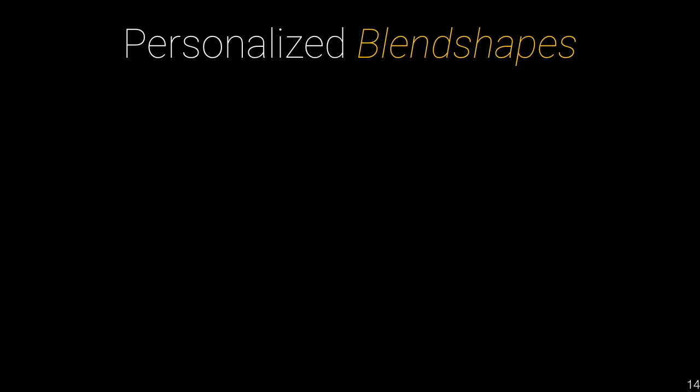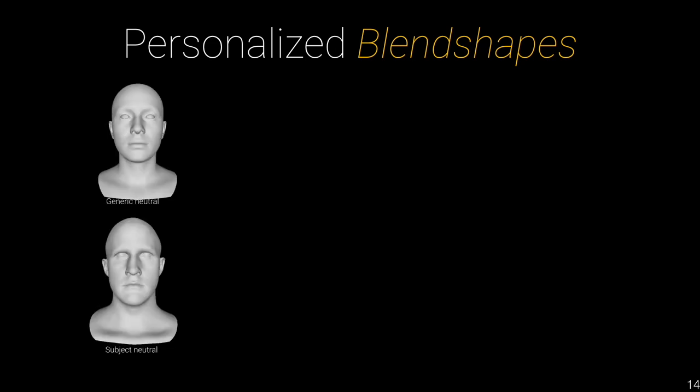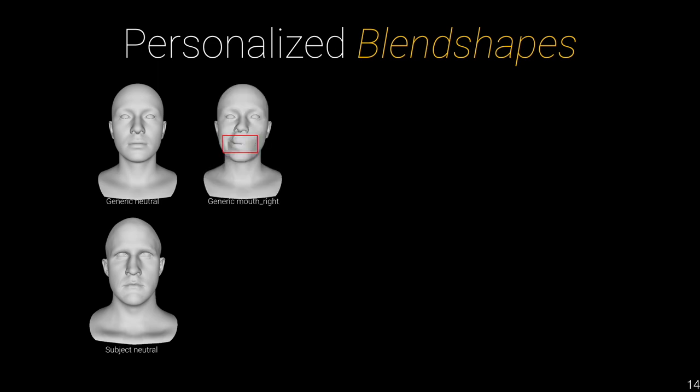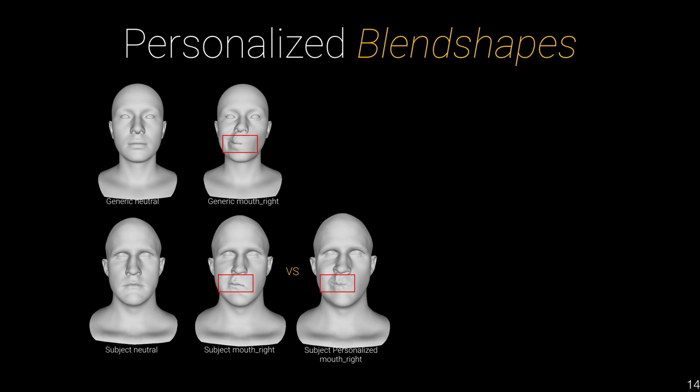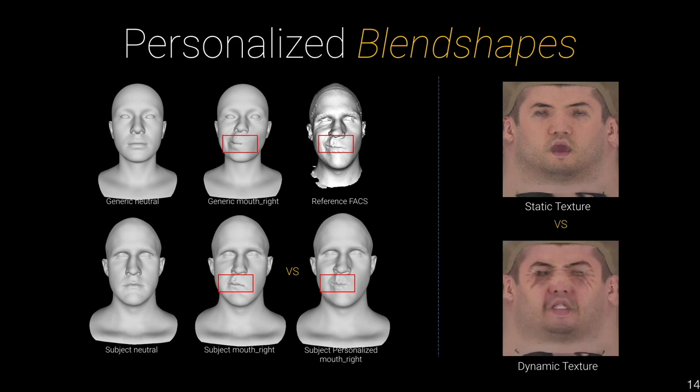Blend shapes are widely used in the animation industry and provide the fundamentals for advanced modeling like muscles, joints, and bones. Personalized blend shapes show the specific way a specific subject performs a unit expression, and are usually manually created by artists based on reference real scans. A set of golden standard blend shapes is usually defined by an experienced artist. Given a set of generic blend shapes and a neutral subject, we can transfer the expression offset of the generic blend shapes to the subject to obtain the same unit expression. Dynamic texture, as mentioned earlier, will also provide more details in the final rendering and is a critical component of personalized blend shapes.